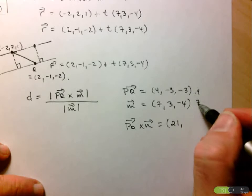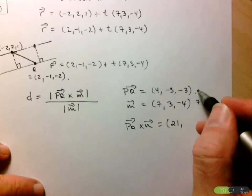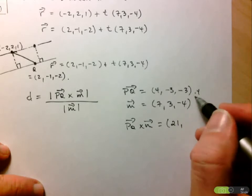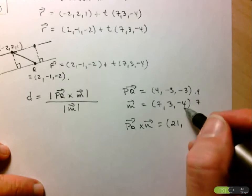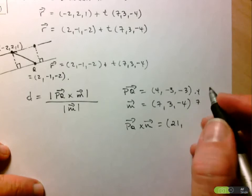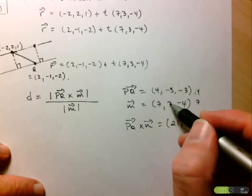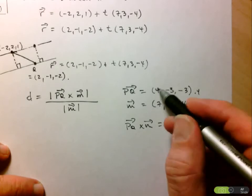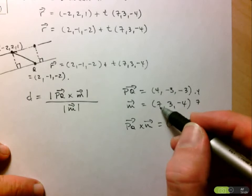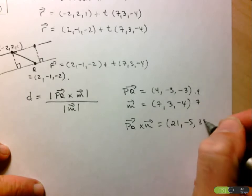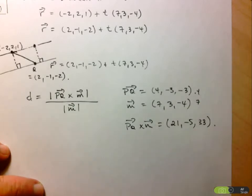Then here we have negative 21 minus negative 16. So negative 21 plus 16. So that's negative 5. And then here we've got 4 times 3, 12 minus negative 21. So 12 plus 21, which would be 33. So there's our cross product.